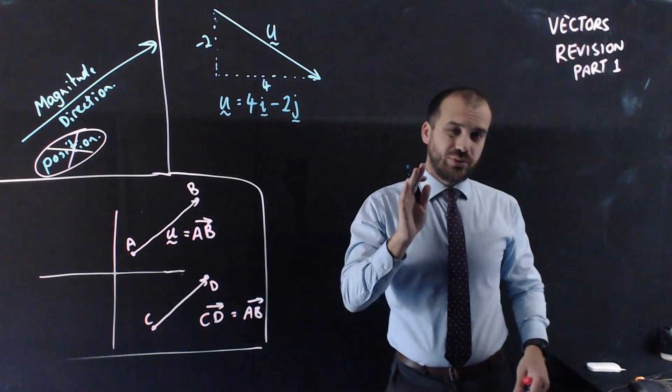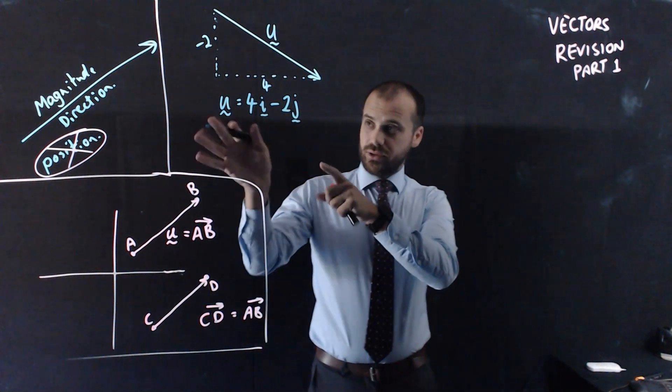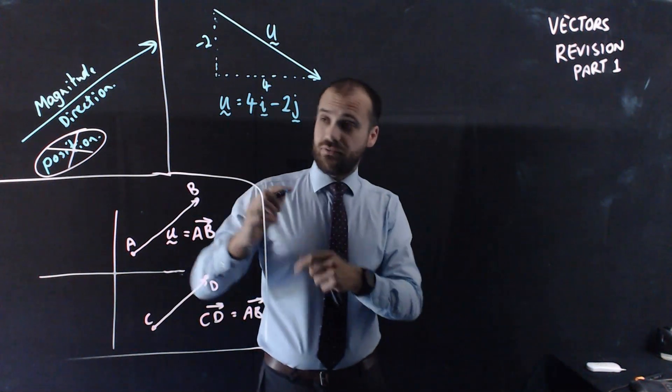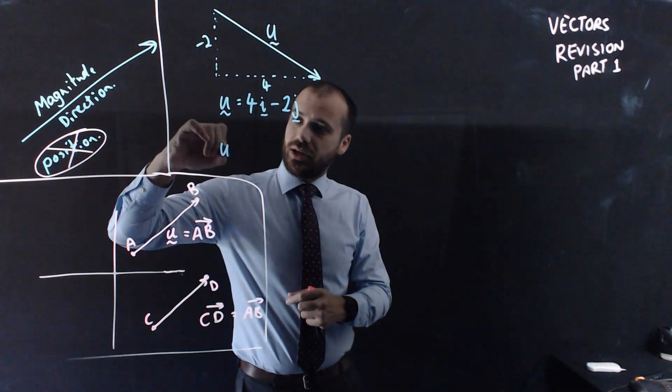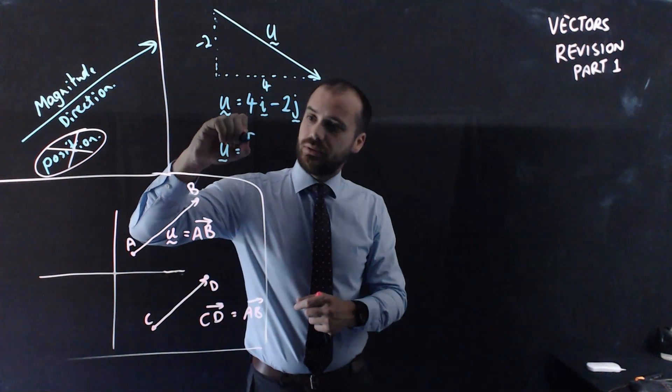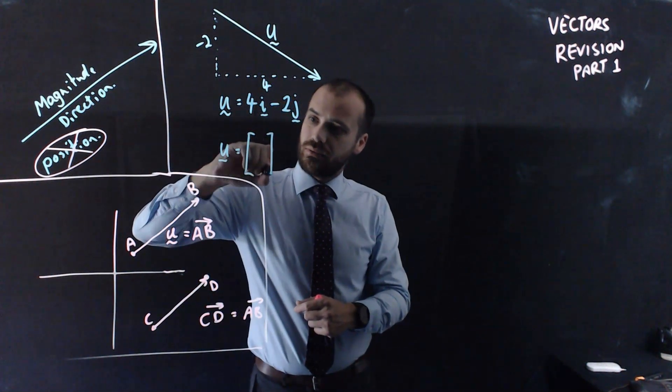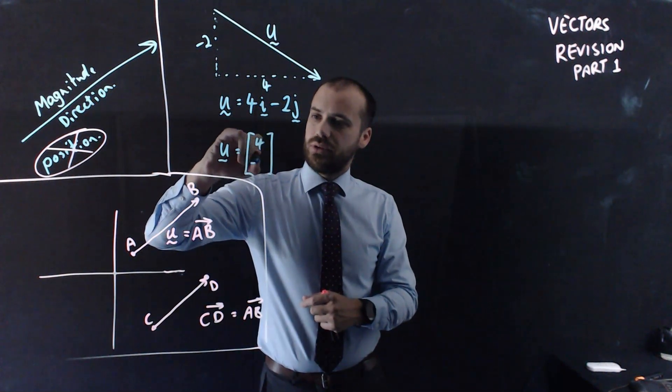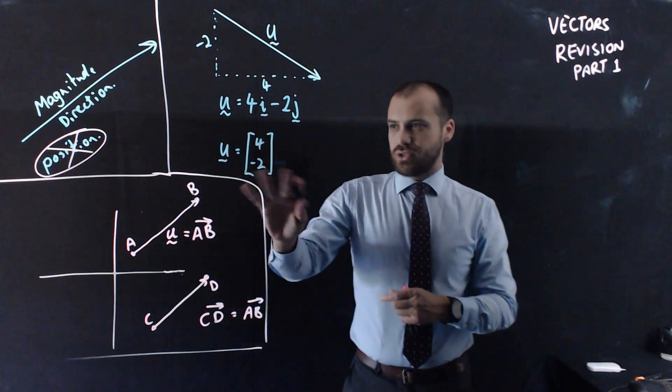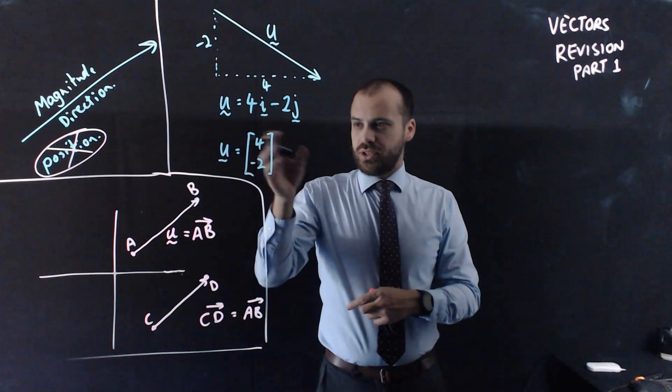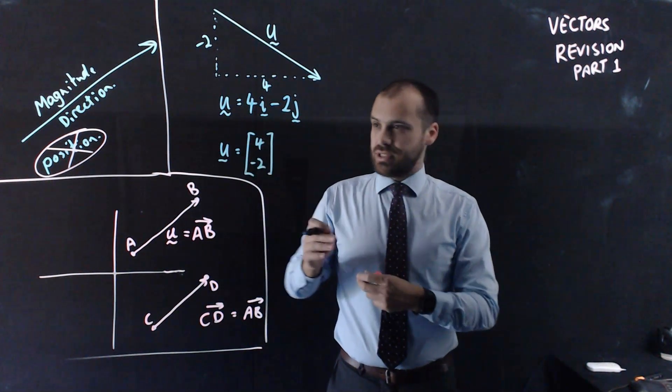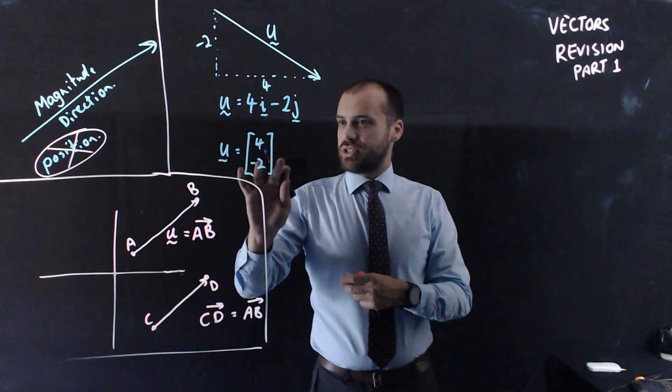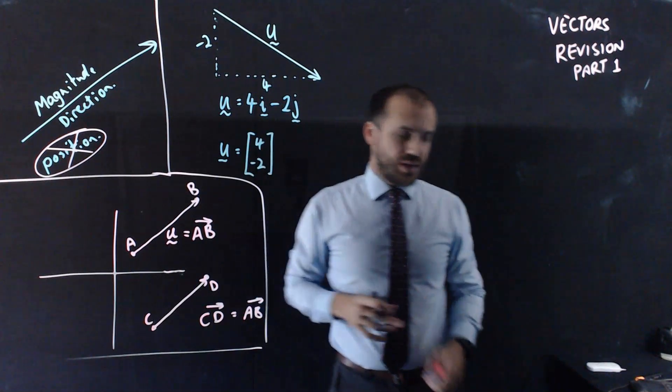We can talk about addition of vectors in a second. A second way to look at that vector or to write that vector would be saying that the vector U is [4, -2], this is called a column vector. You can see it looks like a matrix, you know what matrices are now. That's just another way of writing the same thing.